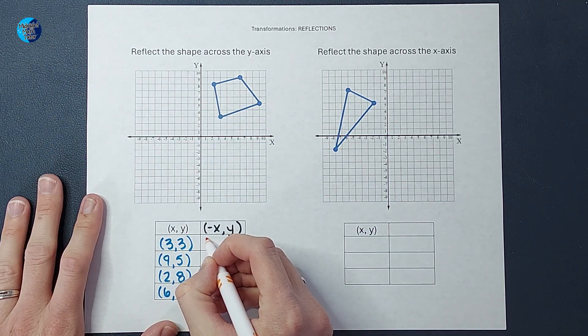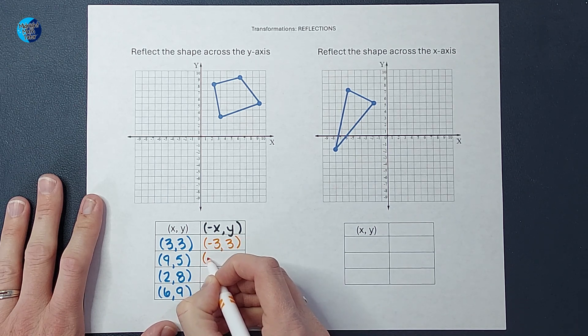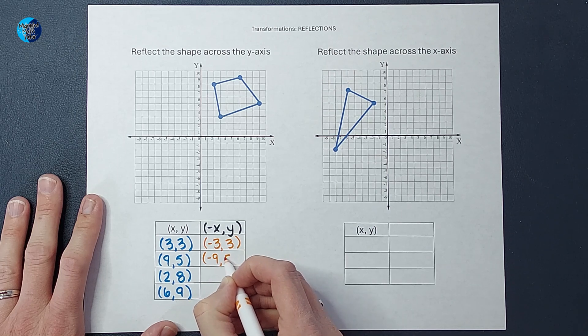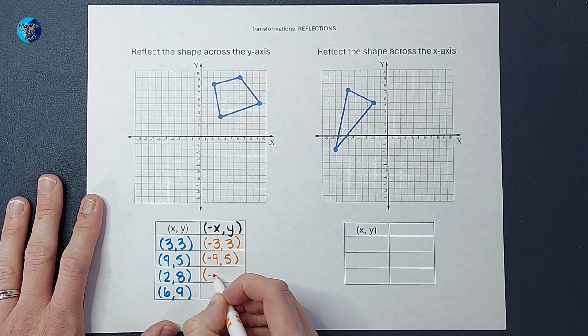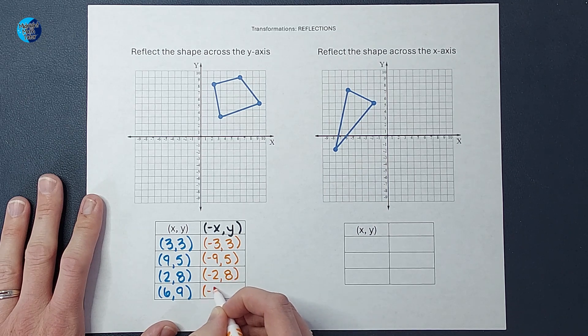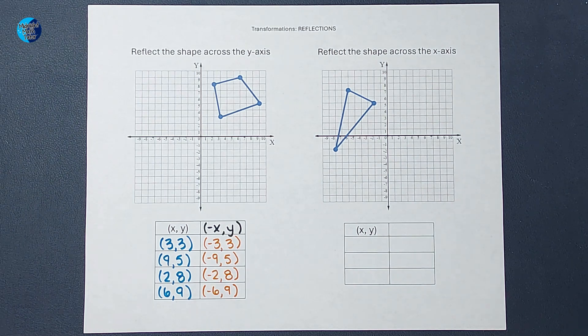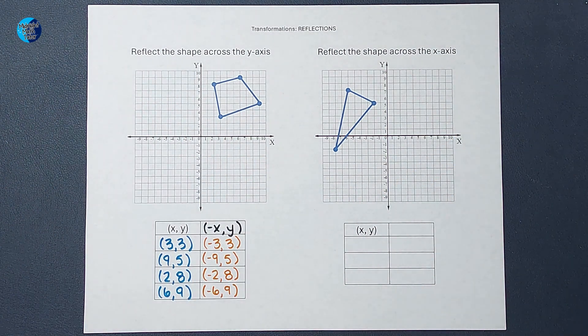So this is going to be negative three, three, negative nine, five, negative two, eight, and negative six, nine. Now let's go ahead and plot those points and make sure it looks like a reflection.